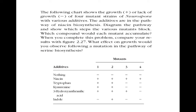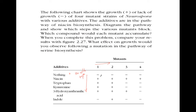OK, I hope you were able to do it — now let's do it together. If there is plus the mutants will grow; if there is minus there will be lack of growth. Again, mutants 1, 2, 3, 4 are mutants and these are substrates. If we add nothing in the medium, there is no growth, which means there is no wild type — all of them are mutants.